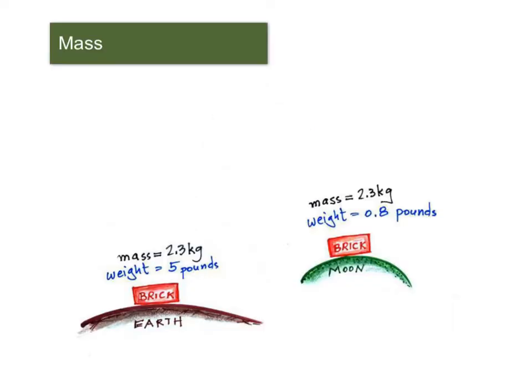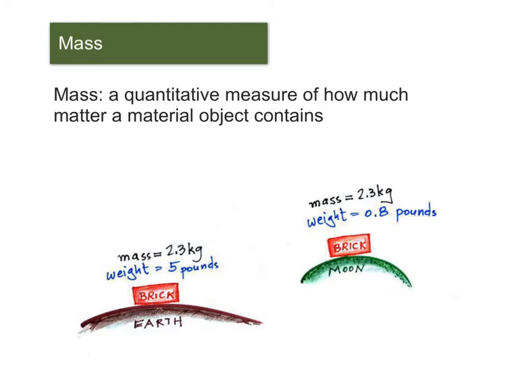Mass is probably the most simple quantitative property that we can assign to matter. So mass is just a quantitative measure of how much matter a material object contains.